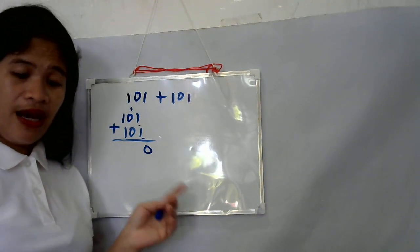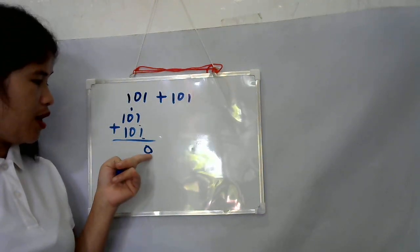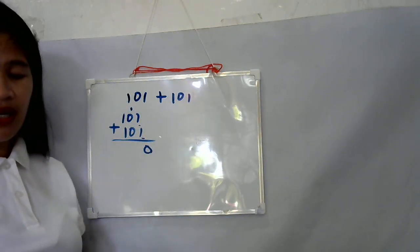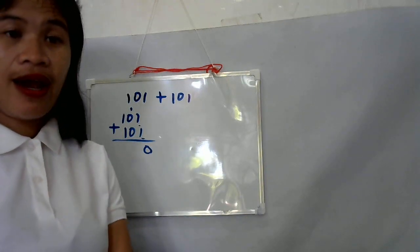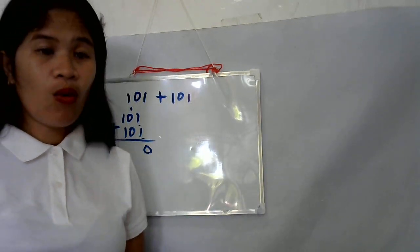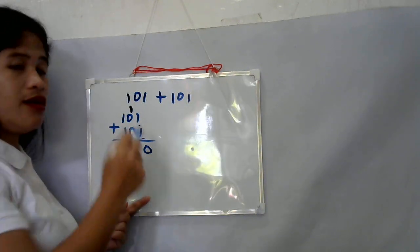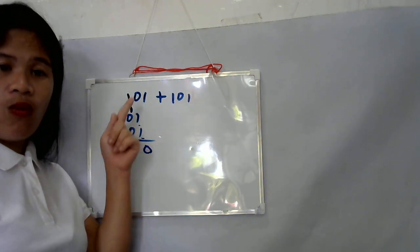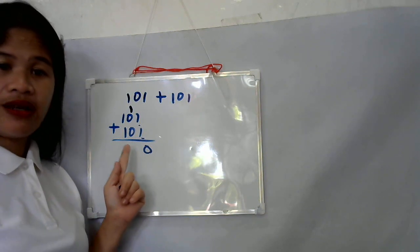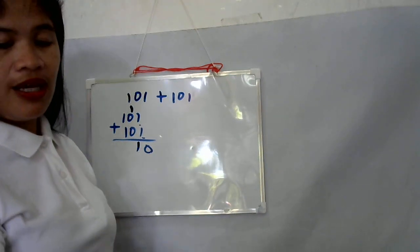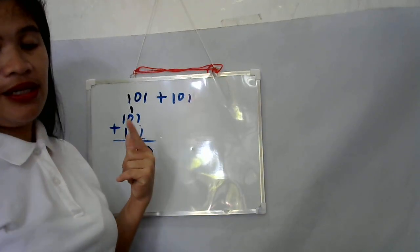Leave the zero in the ones column, then carry the value of one to the second column. Now add the tens place. One plus zero plus zero, the answer is one. Nothing carries to the hundreds place, and leave the value in the tens place.